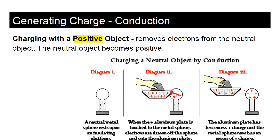When you bring a positive object near a neutral object, it actually steals electrons. Remember that opposite charges attract — the positive object pulls the electrons from the neutral object toward itself. Now the neutral object becomes positive because it has fewer electrons, and the positive object becomes a little less positive.